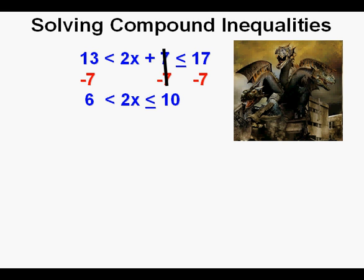We need to divide everything by the coefficient of x to get x isolated. So we divide everything by two. The 2 over 2 in the middle cancel, and we bring down what's left. 3 < x ≤ 5.